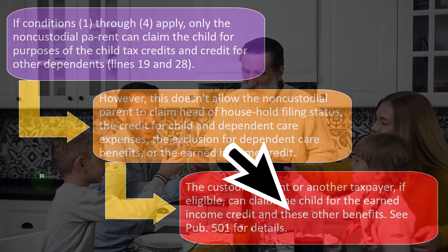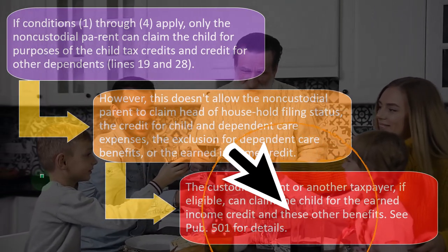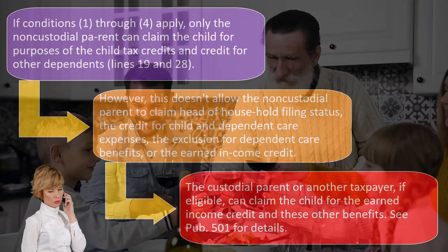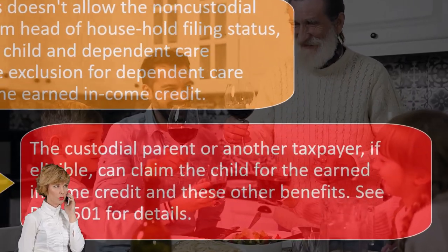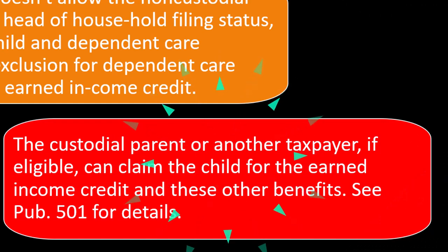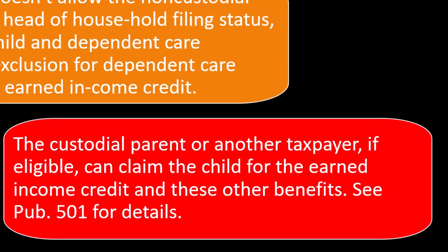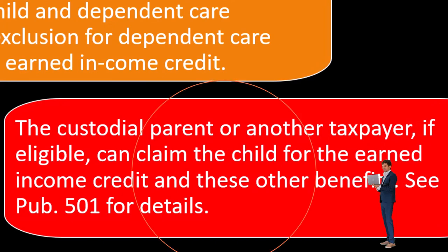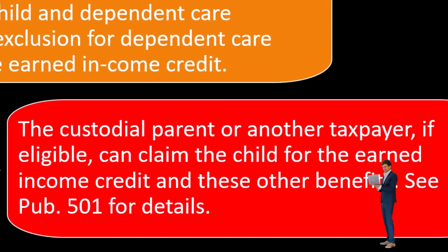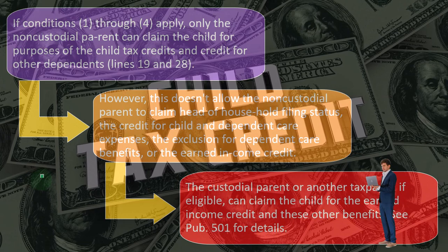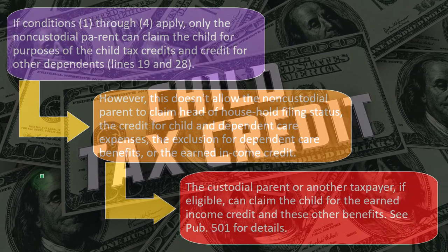So the custodial parent, or another taxpayer if eligible, can claim the child for the earned income credit and other benefits. See Publication 501 for more details. The earned income credit is also tied to how many children there are. From a lower-income perspective, a child becomes quite valuable for tax purposes — you could have head of household status, the child tax credit, and the earned income credit, which increases substantially from zero to three children.